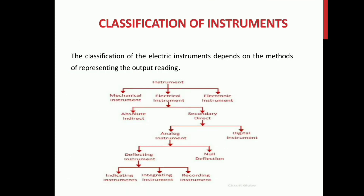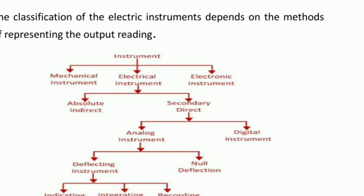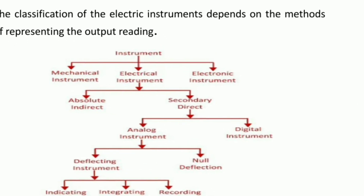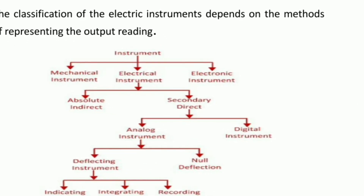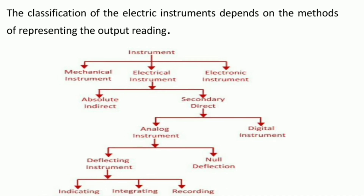Next is the classification of instruments. The classification of electrical instruments depends on the method of representing the output reading. Instruments can be classified as giving analog or digital output. For example, in a shop, a digital weighing scale shows output like 1000 grams directly as a number.